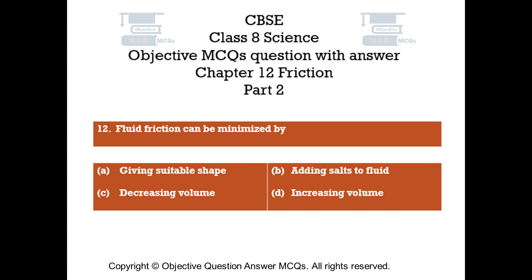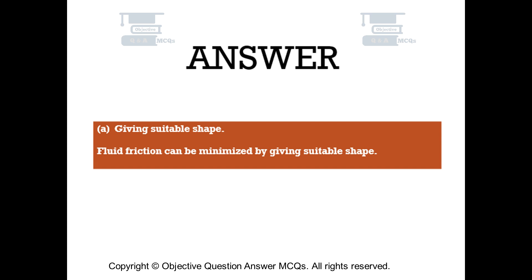The right answer is Option A: Giving suitable shape. Fluid friction can be minimized by giving a suitable shape.